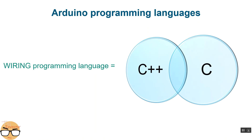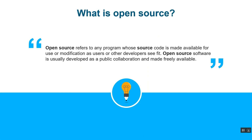Open source refers to any program whose source code is made available for user modification by users or developers. As a company, putting your product as open source means you're ready for anyone who wants to modify it or make their own version. For example, Linux is open source — I can download a flavor like Ubuntu and modify it without worrying about being sued. Similarly, Arduino boards are open source: the Arduino company gives you access to the schematics so you can make your own Arduino boards.